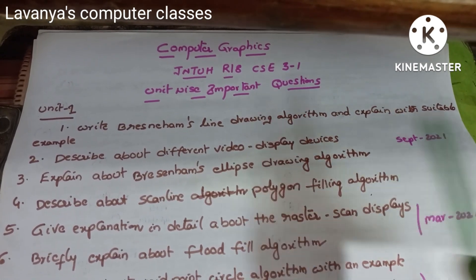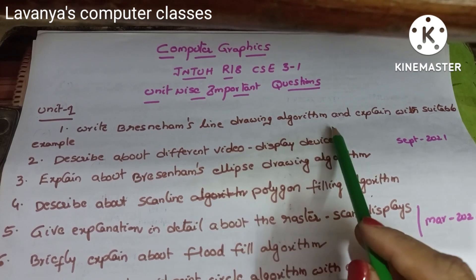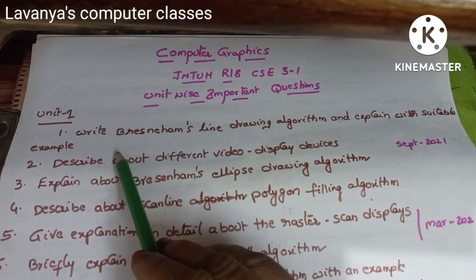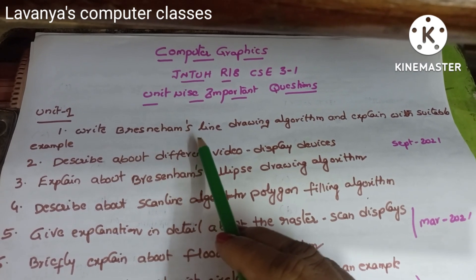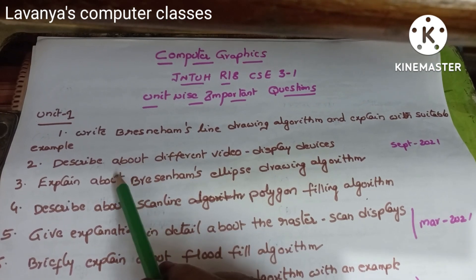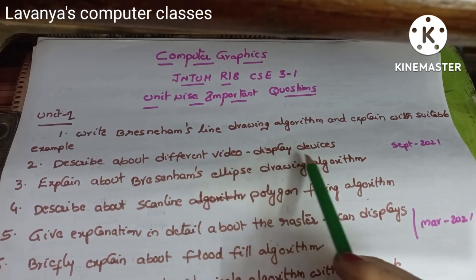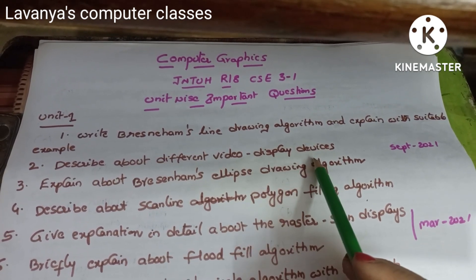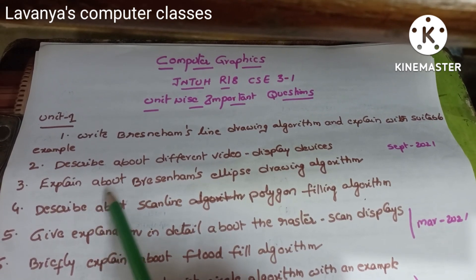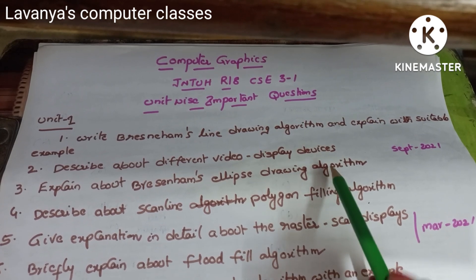Unit 1: First, write Bresenham's line drawing algorithm and explain with a suitable example — a very very important question. Second, describe about different video display devices, which is a short answer question. Third, explain about Bresenham's ellipse drawing algorithm.